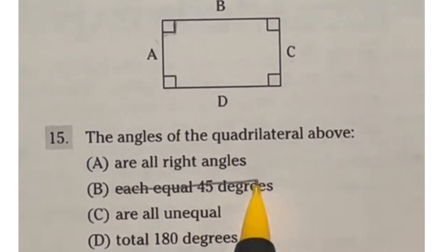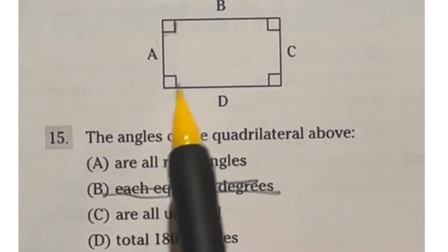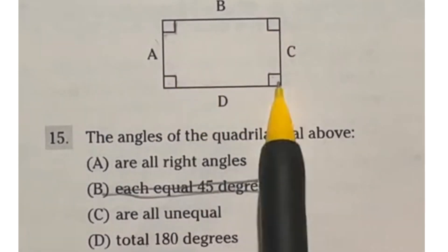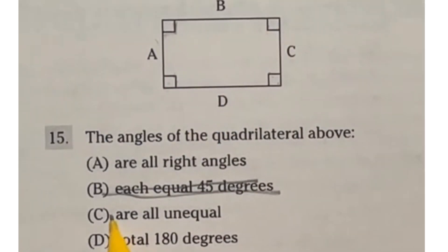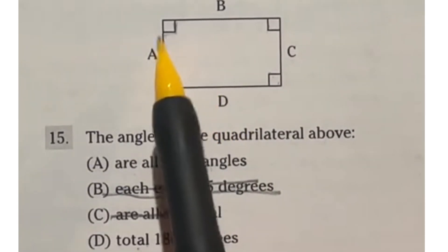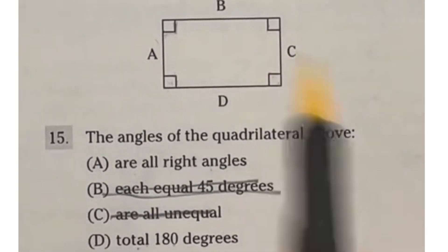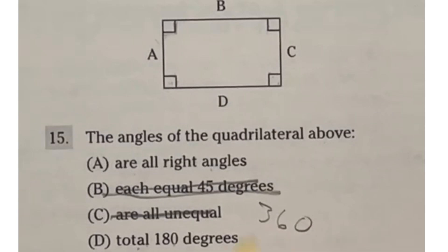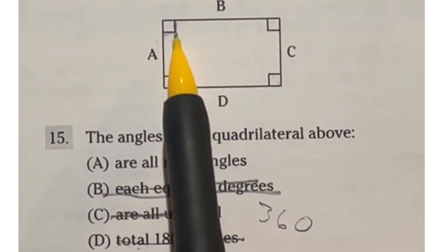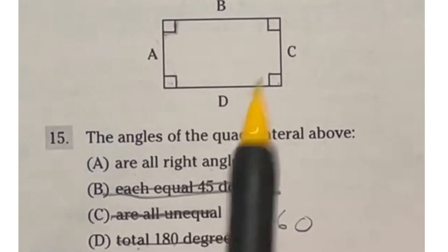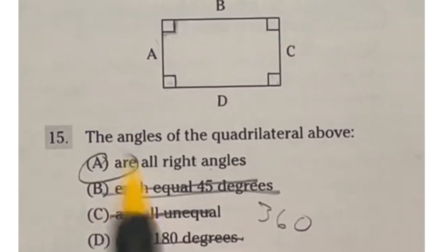So right off the bat, each one being 45 is just wrong. Also notice that every one of them has this square. So all four of them are 90 degrees. So the fact that they're unequal is also out. So we're left with the fact that they're all right angles and the fact that they total 180 degrees. Well, if you do 90 plus 90, that gives you 180 plus two more 90s actually puts us at 360. So that guy's out as well. And from the very beginning, I told you this little thing right here means that it's a right angle, also known as 90 degrees. So our final answer here is A.